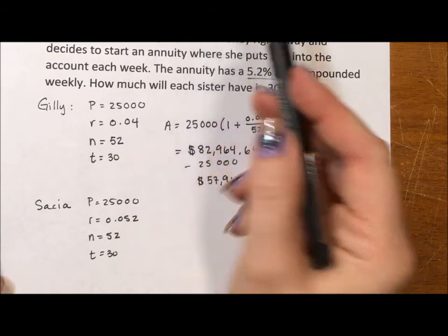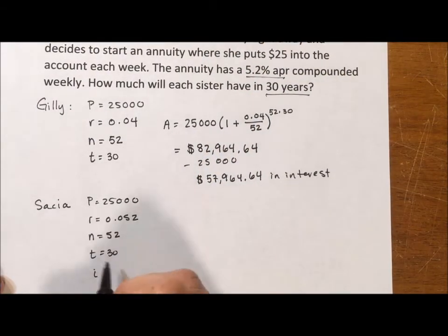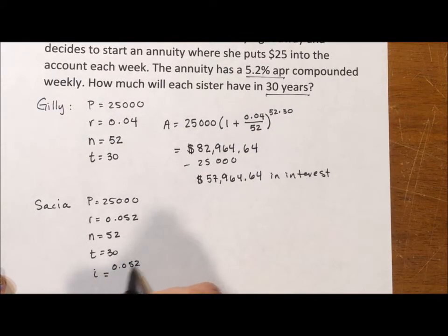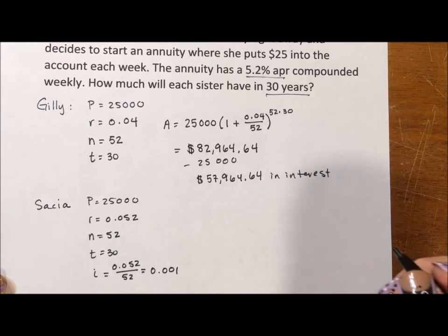Her number of times per year is also 52 and her time is also 30 years. So for an annuity, what these I's and N's mean, I is just taking a shortcut of this. It's taking the 0.052 and dividing it by 52 right away and finding out that that number is 0.001. And this N is the same as the NT. It's taking the 30 times the 52. I'm just going to leave that in as is.